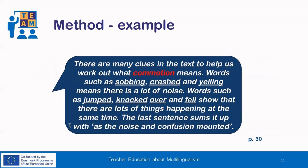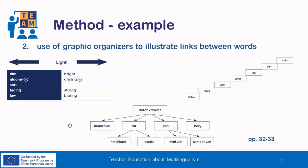Here you can see an example of the teacher guiding students through the use of contextual cues in order to discover the meaning of the unknown word 'commotion' encountered in the text. On the other hand, the method of the present study also included the use of graphic organizers to illustrate links between words. Here you can see some examples. On the upper left of the slide, you can see a grid for opposites. On the bottom middle, you can see a tree diagram. And on the upper right of the slide, you can see a continuum for synonyms.